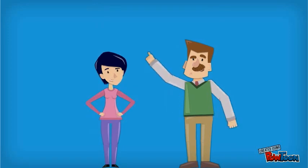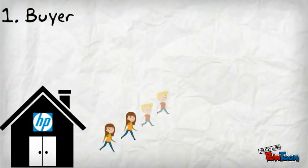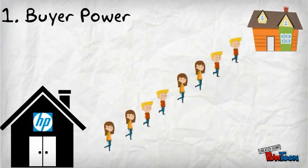The five forces are: first, buyer power. This means how easy is it for the buyers to drive the prices down. This is mainly driven by the number of buyers, the importance of each individual buyer to your business, and the cost of them switching from your products and services to those of someone else. For example, in this case, HP buyers have moderate to high power.